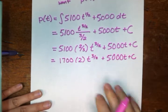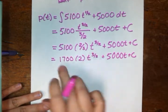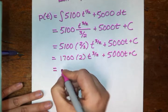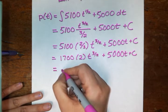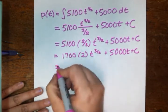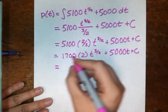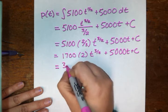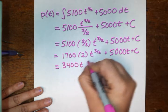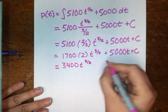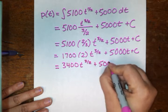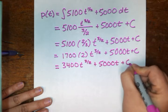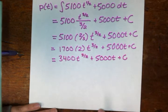So 1,700 times 2t to the three-halves, plus 5,000t plus c. All I'm doing is simplifying here. Right now, I just kind of got rid of that three, and now we multiply this times two. So it looks like the function that we're looking for, our p of t, finally, once we get it all simplified down as much as we can, is going to be 3,400 times t to the three-halves, plus 5,000t plus c.